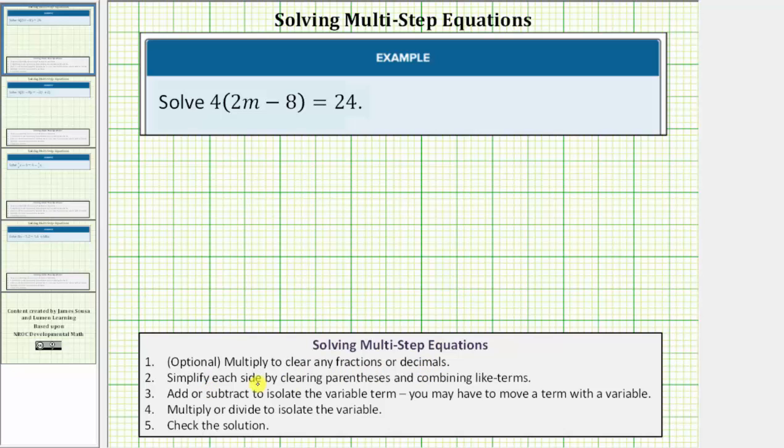Step two, we simplify each side by clearing parentheses and combining like terms. So the first step in this equation is to clear the parentheses on the left side by distributing four.